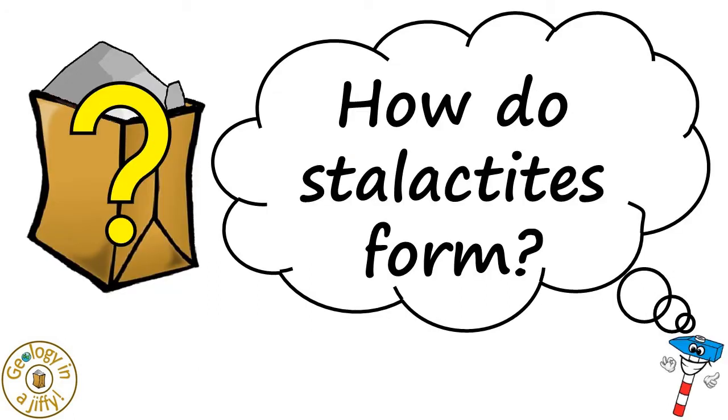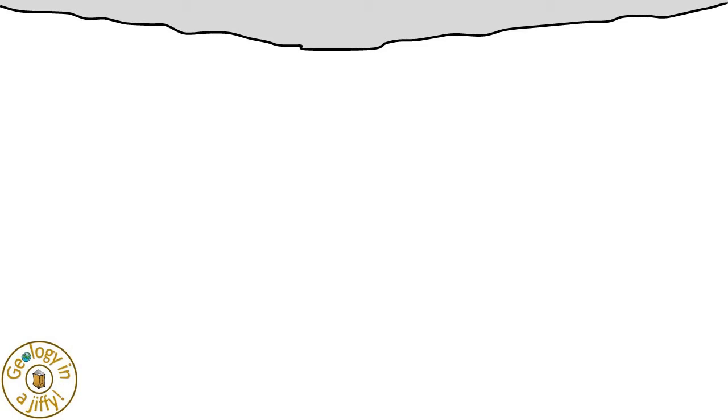How do stalactites form? Imagine a cave, deep underground. In the roof of the cave, there is a crack, or a joint in the rock. Groundwater, flowing through the rock, starts to drip from the crack. As the drip falls to the floor, some of the dissolved minerals that are in the water remain on the ceiling, these left behind as a hard layer on the roof of the cave. This process repeats, with further layers of minerals precipitating from the droplets. Over time, this continues, with newer layers of minerals being precipitated upon the recently formed layers, resulting in a downward pointing stalactite.